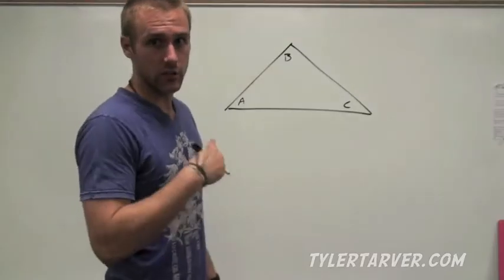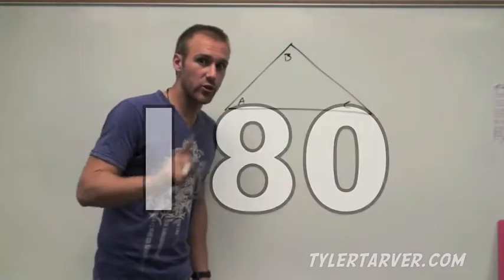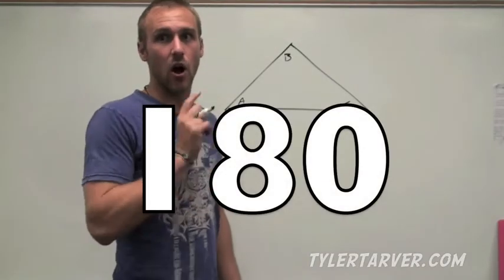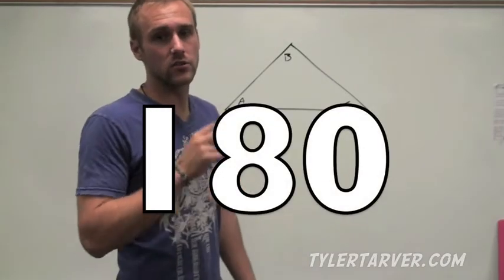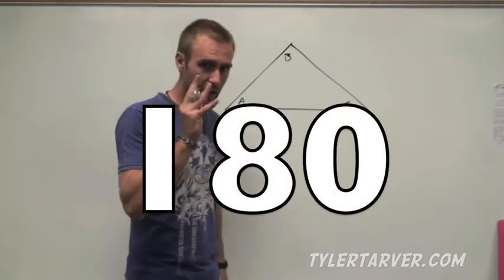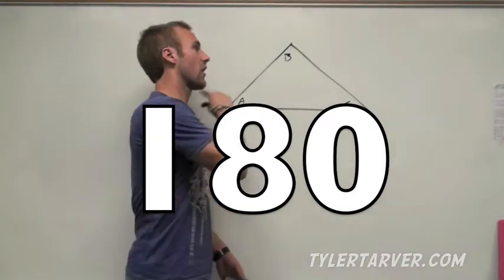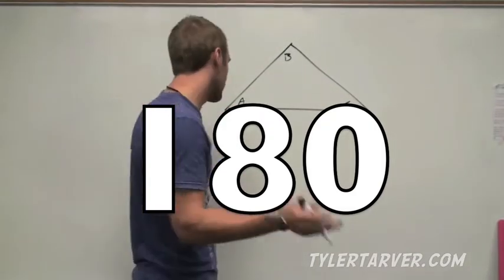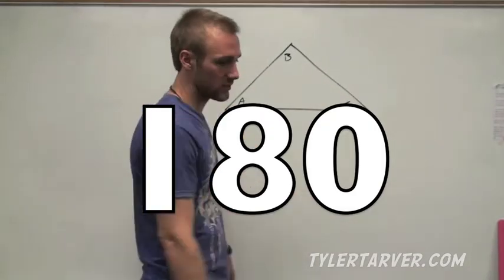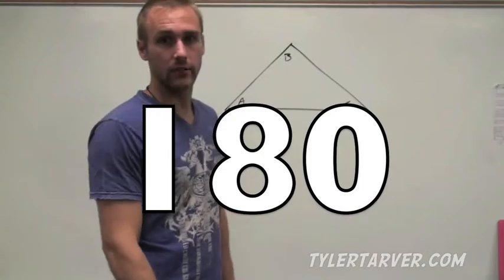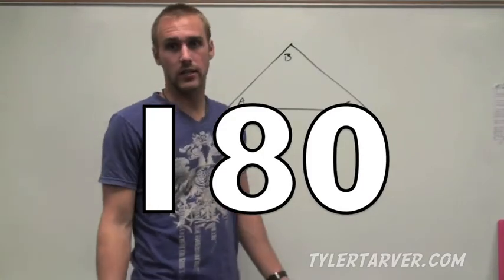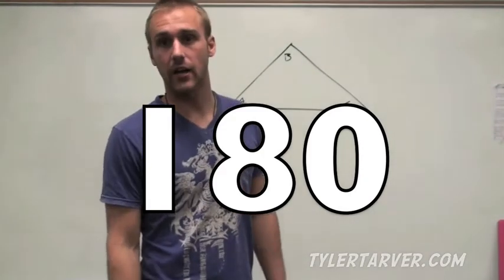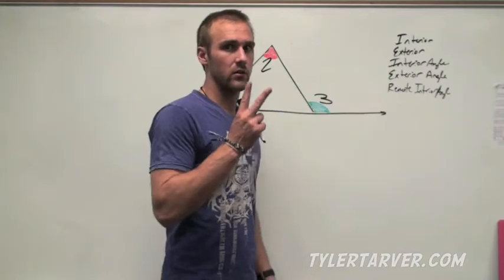In a triangle — every triangle ever made throughout the beginning of time — all three angles are going to add to 180 degrees. 180 degrees, forever and always. That's the end of that story. Write that down.